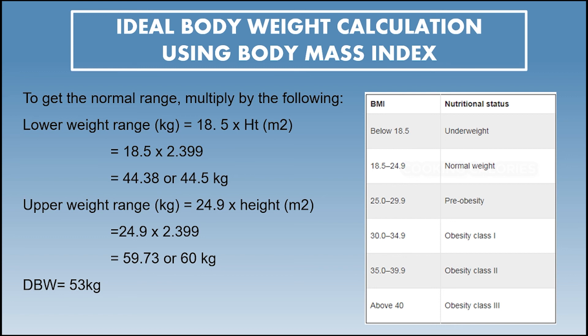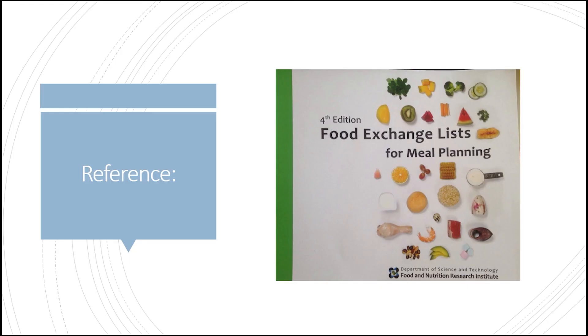So for a woman with a height of 5 feet and 1 inch, her ideal body weight is 53 kilograms, or she should maintain a weight between 44.5 kilograms and 60 kilograms. If her weight falls below 44.5, she is considered underweight; if her weight exceeds 60 kilograms, she is considered overweight. Both underweight and overweight are associated with health risks. That would be all — thank you so much.